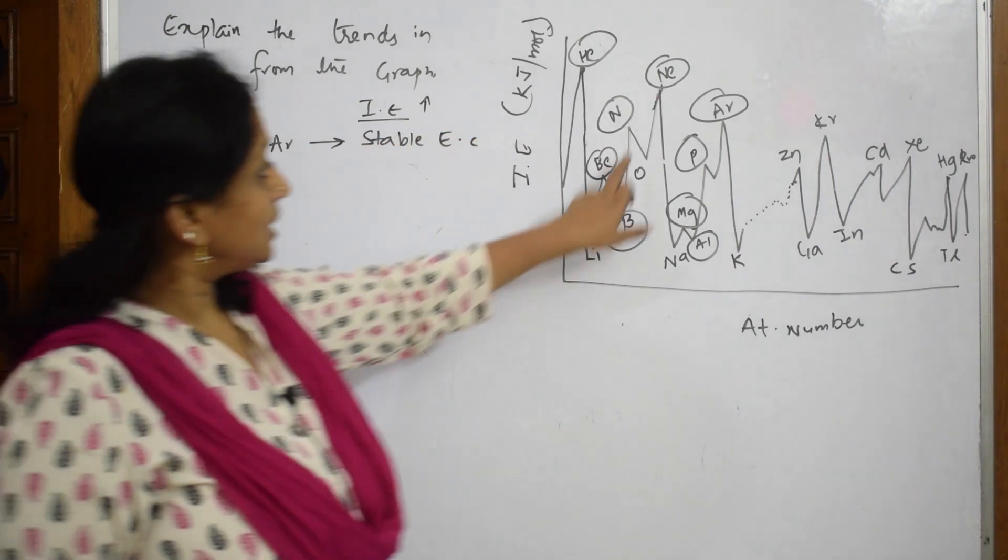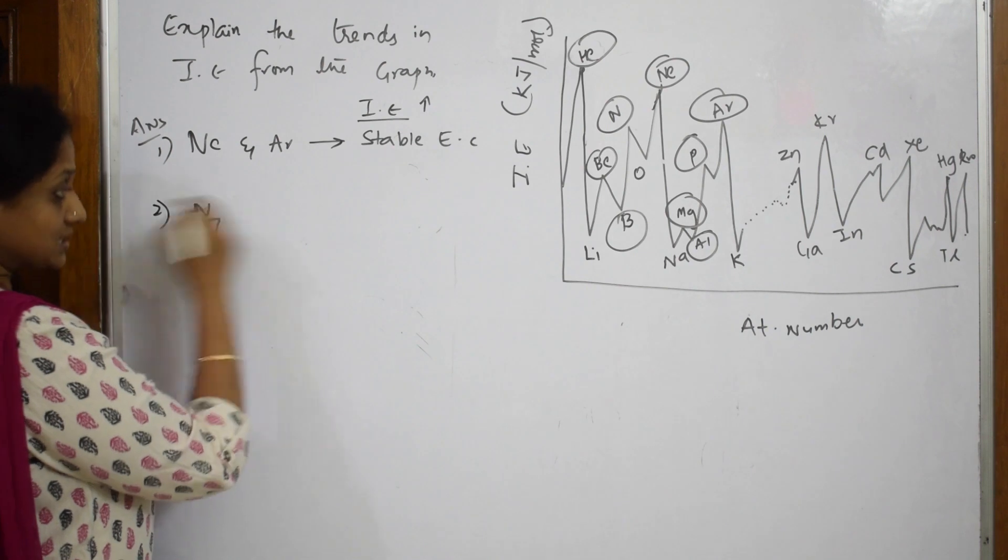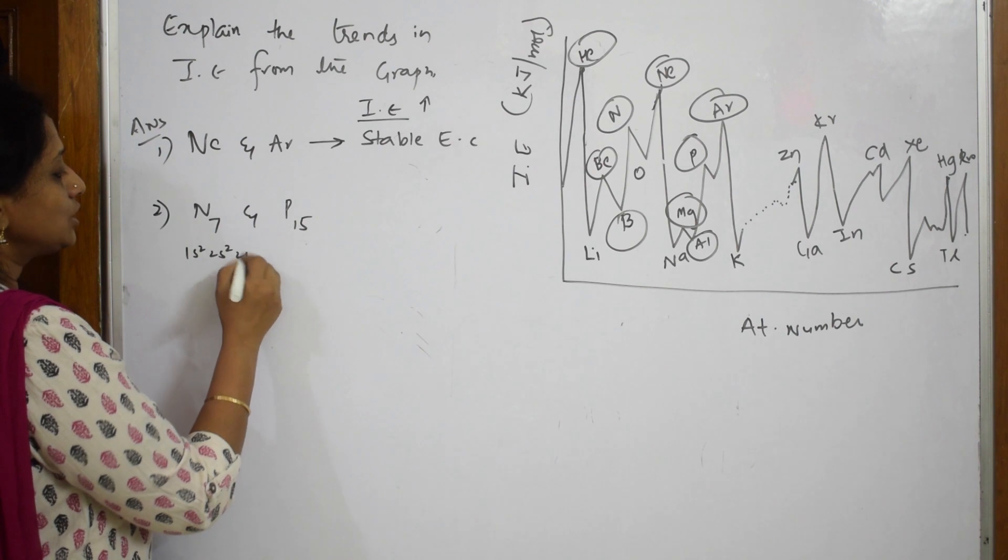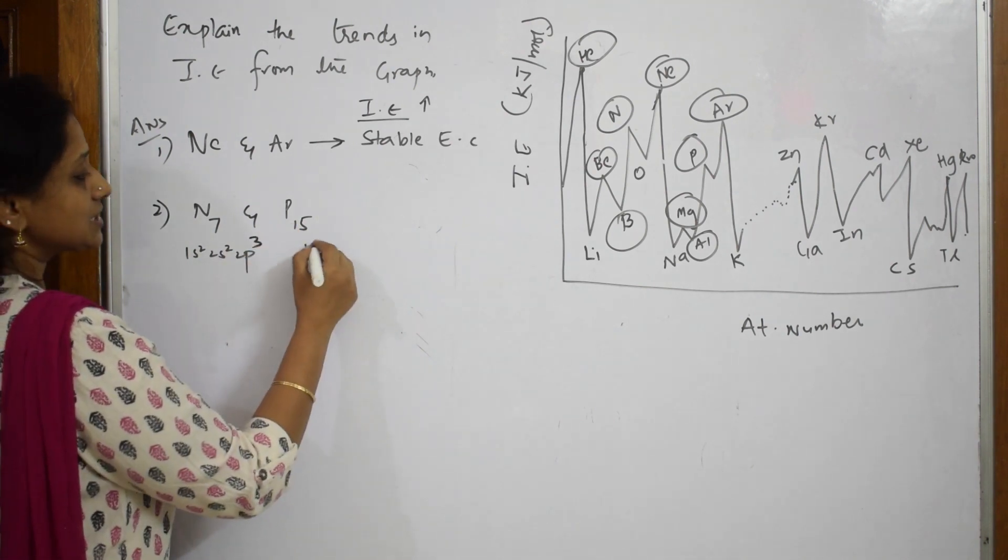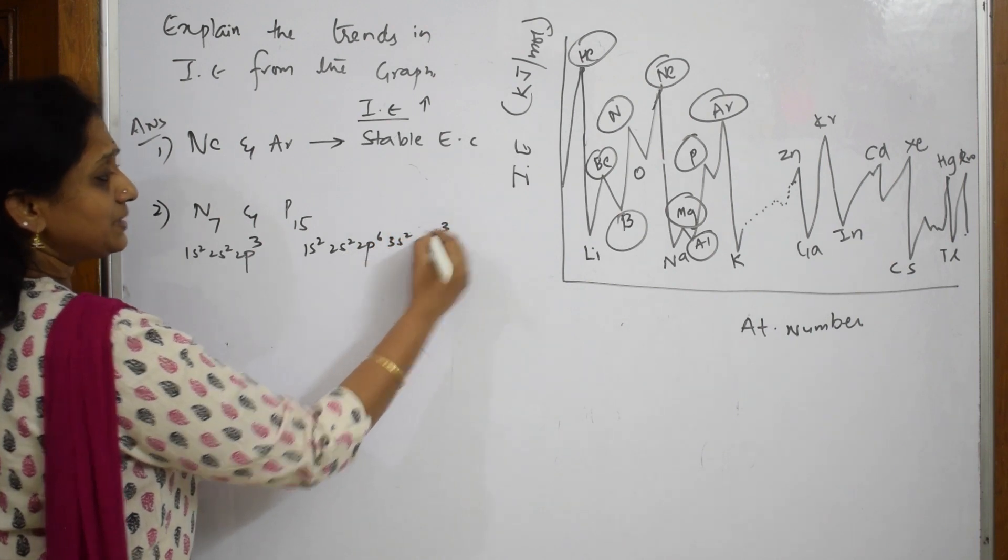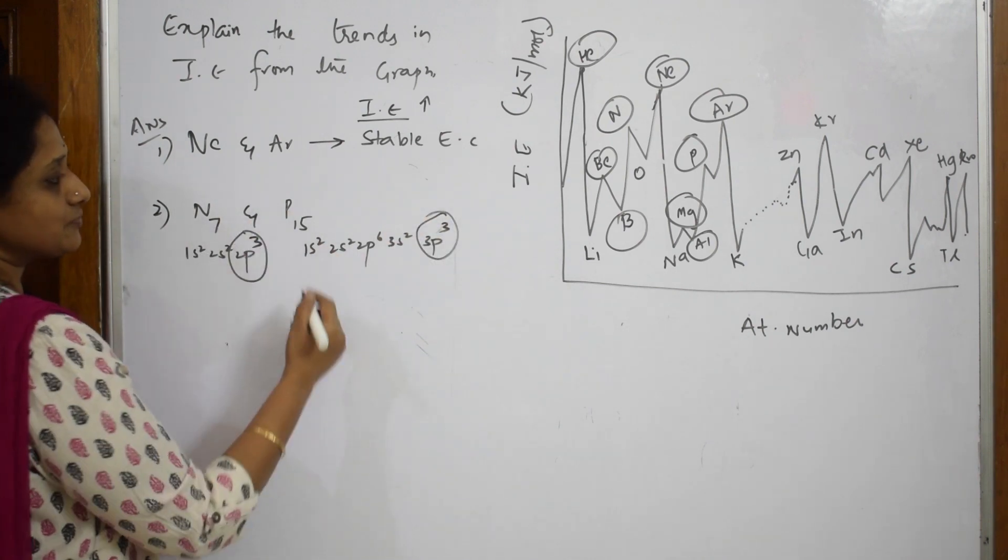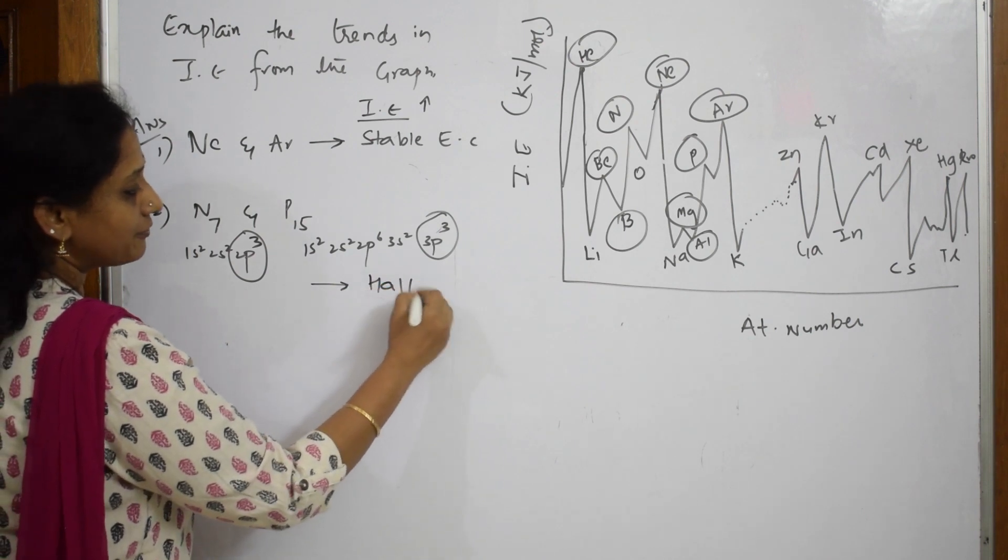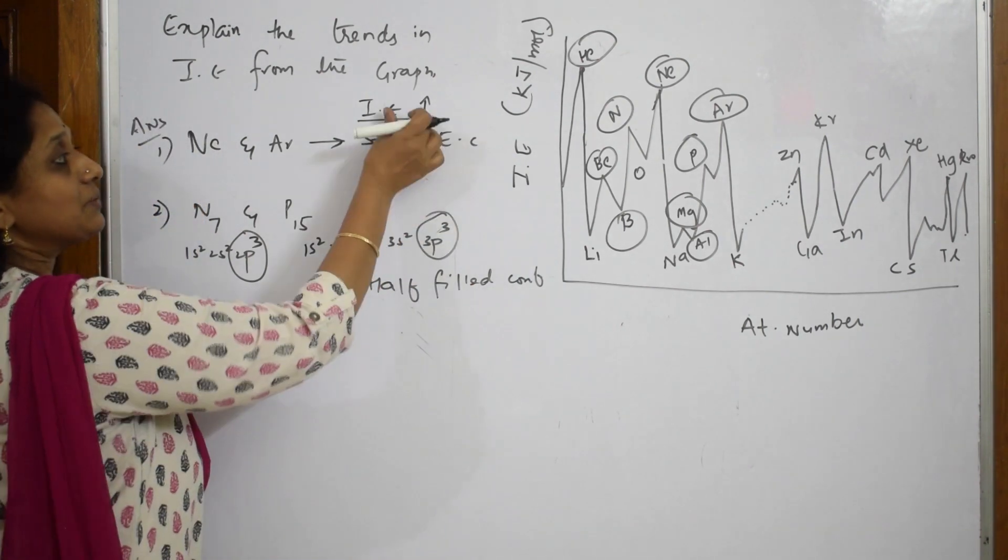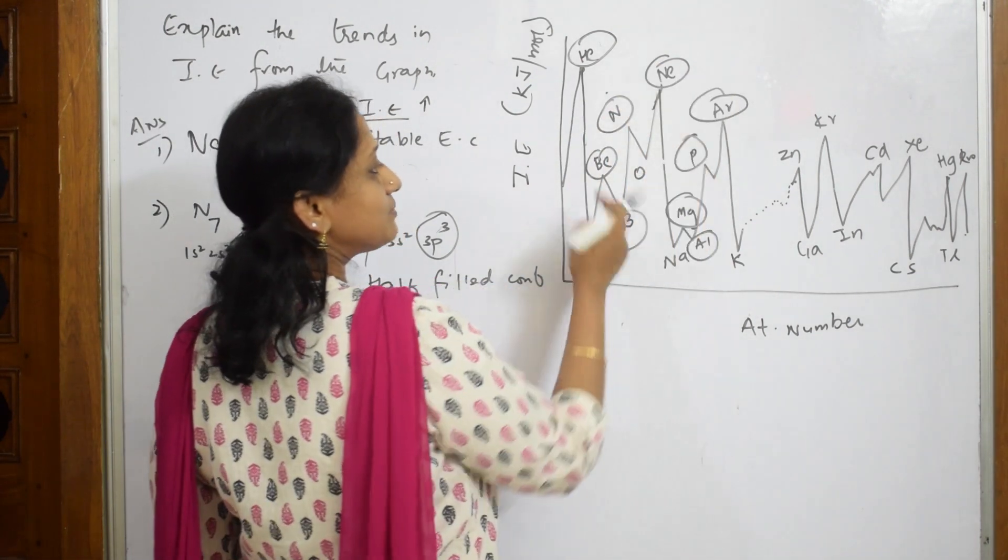Now again, nitrogen and phosphorus also have peaks. Nitrogen is atomic number 7, phosphorus is 15. For nitrogen: 1s2 2s2 2p3. For phosphorus: 1s2 2s2 2p6 3s2 3p3. Here this is half-filled, this also is half-filled. So in nitrogen and phosphorus, the concept is half-filled configuration. When it is half-filled, ionization enthalpy will be more because they are stable enough.